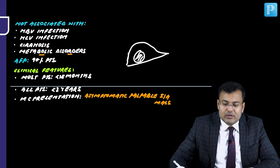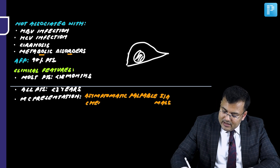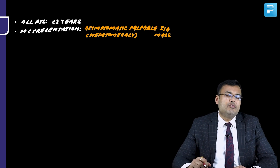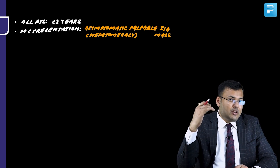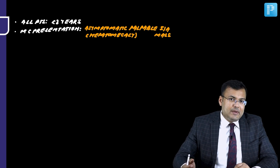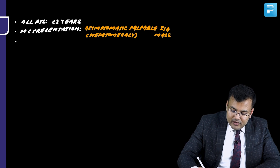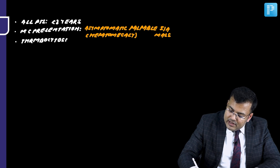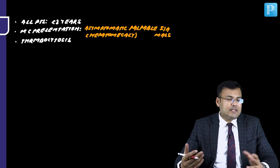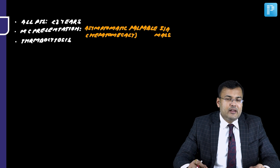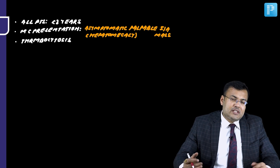This palpable mass is actually hepatomegaly — an enlarged liver. On laboratory investigation, the patient's platelet count is very high despite having no symptoms, so you may find thrombocytosis. The most common route of spread is hematogenous, and the most common site of metastasis is the lungs.